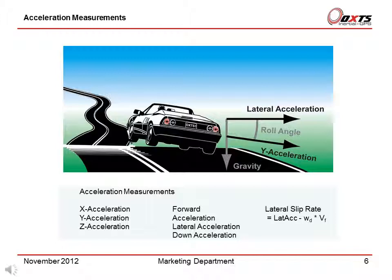When the vehicle has some roll angle, the y acceleration has some component of gravity in it. The RT knows the roll and pitch angles very accurately, so it can rotate the x, y, z accelerations to give forward, lateral and down accelerations. The forward and lateral accelerations do not have any component of gravity in them; the lateral acceleration is the roll-corrected acceleration. The lateral slip rate is an acceleration that measures how you are deviating from the perfect circle.